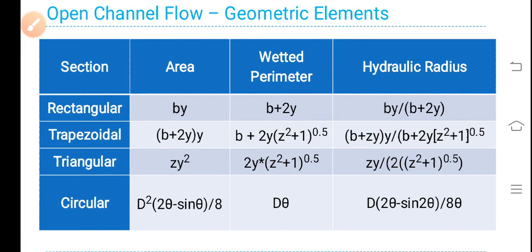For rectangular section: area is equal to B into Y, wetted perimeter is B plus 2Y, and hydraulic radius is area divided by wetted perimeter, that is BY divided by B plus 2Y.